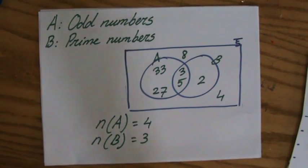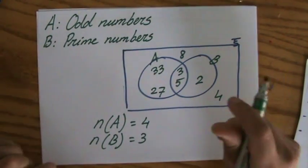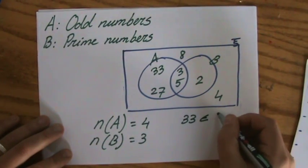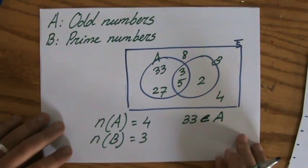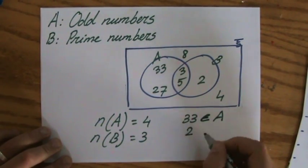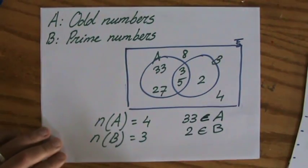Then the second piece of information you should be familiar with, or notation you should be familiar with, is the following. 33 is an element of A. So we use this typical ancient Greek E, or maybe they still use it. And two is an element of B.